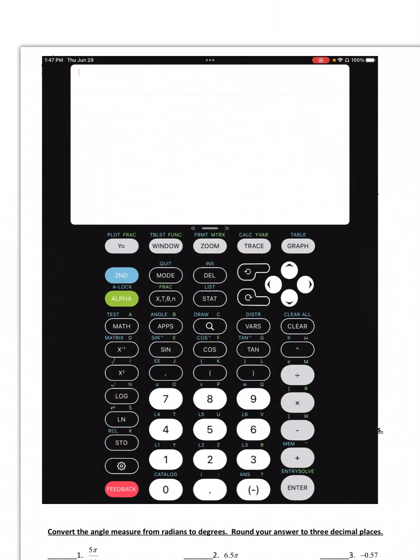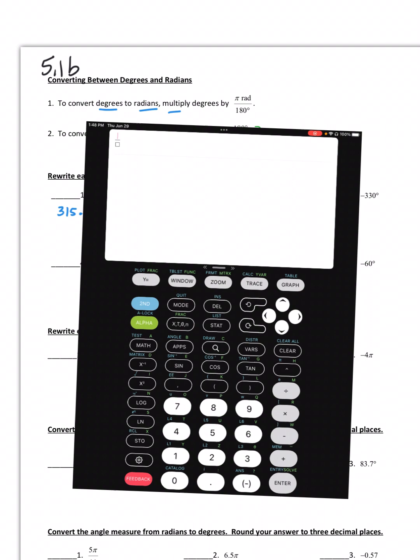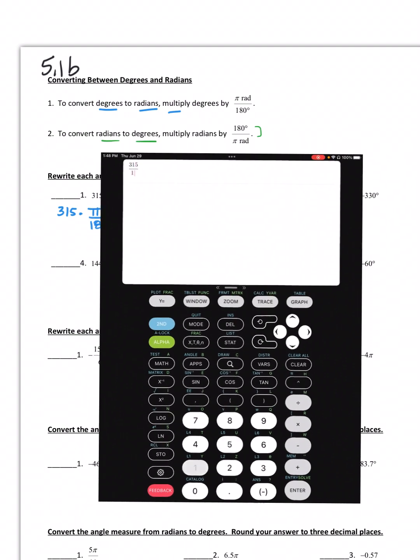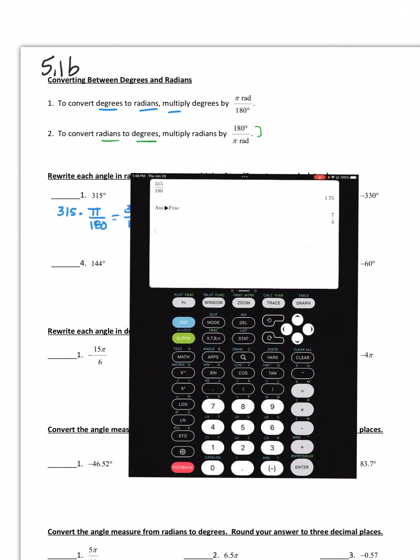So we put in our fractions, alpha y equals. We would put in 315 over 180. If you hit enter, it's going to put it in decimal form, but to make it a fraction, just hit math, enter, enter, and it will reduce that fraction for you. So just don't forget that your answer is going to have pi in it. So it would be 7π over 4.